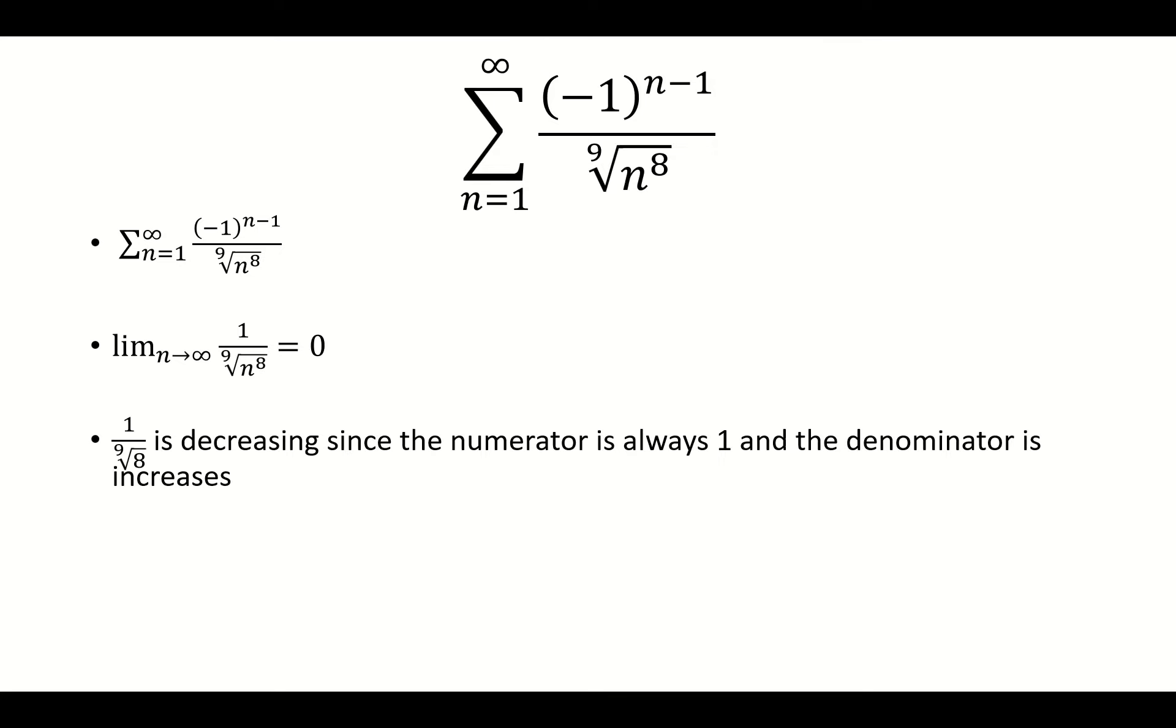1 over the 9th root of n to the 8th is decreasing, because the numerator is always 1, so that doesn't change. But the denominator is always increasing. So the 9th root of n to the 8th is increasing, which means the denominator is getting bigger and bigger, causing the whole thing to get smaller and smaller. So this is decreasing.